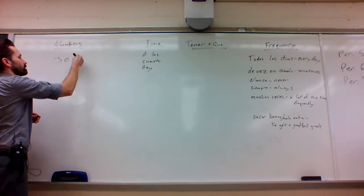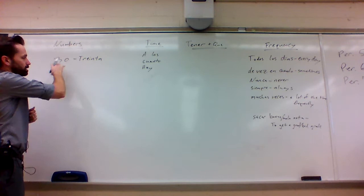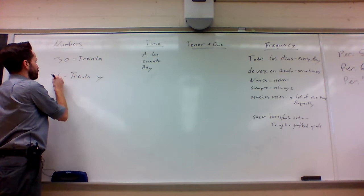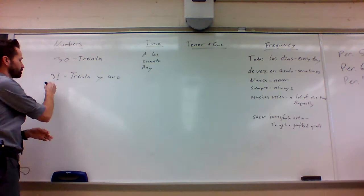So the number 30 is treinta. And the way you add extra numbers, so let's say you want to do 31, you just take the tens digit, 30, add the word y, which means and, and then write the ones digit, which would just be uno. So this works for all the rest of these.